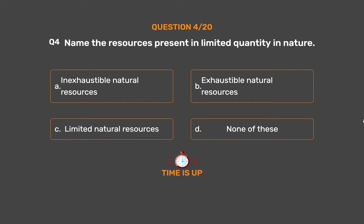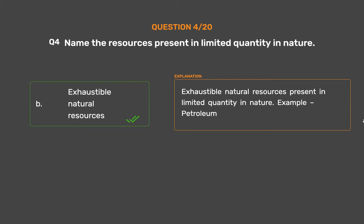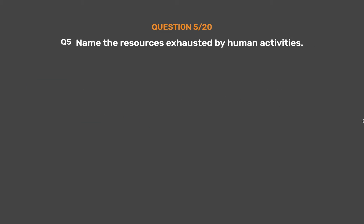The correct answer is Option B: Exhaustible natural resources. Exhaustible natural resources are present in limited quantity in nature. Example: Petroleum.